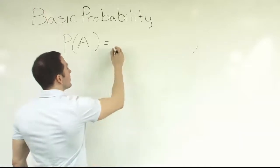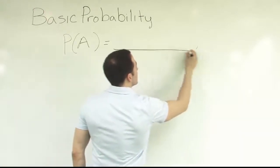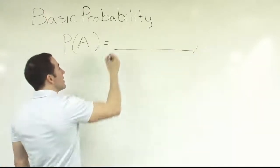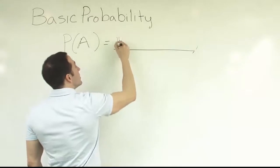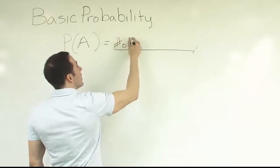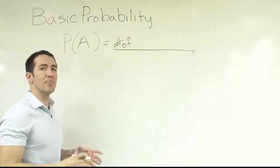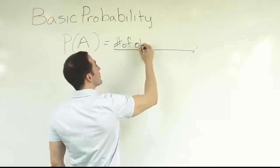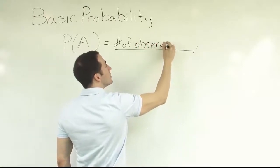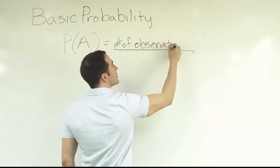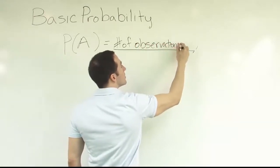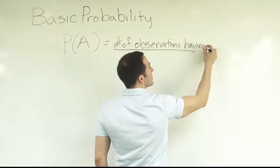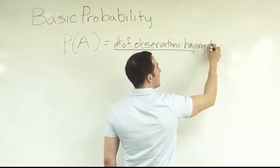The structure of the fraction is very similar but not quite the same. It's going to be the number of — but now since we're drawing a sample, we'll say the number of observations having trait A.